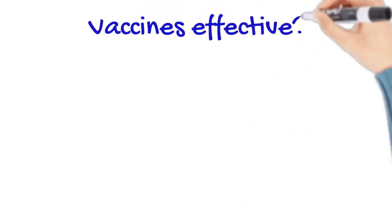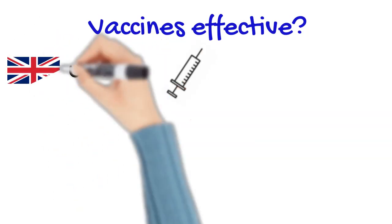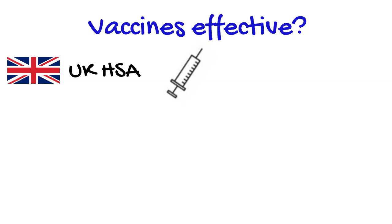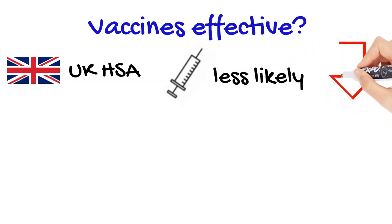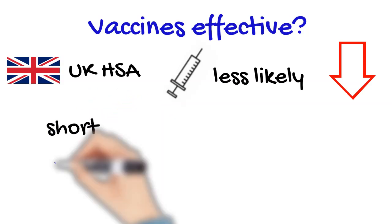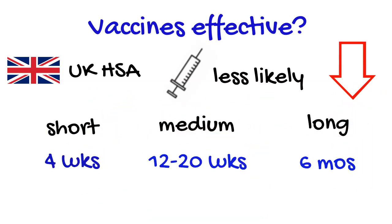Are vaccines effective against long COVID? There is growing evidence that the risk of long COVID is reduced in people who have been vaccinated. An analysis by the UK Health Security Agency of 15 studies that looked at the effectiveness of vaccination against long COVID concluded that there is evidence that vaccinated people are less likely to report long COVID symptoms in the short, medium, and long term after infection. There is evidence that if vaccinated people get infected, they have less virus in their body, so it would make sense for them to have less virus-related complications.